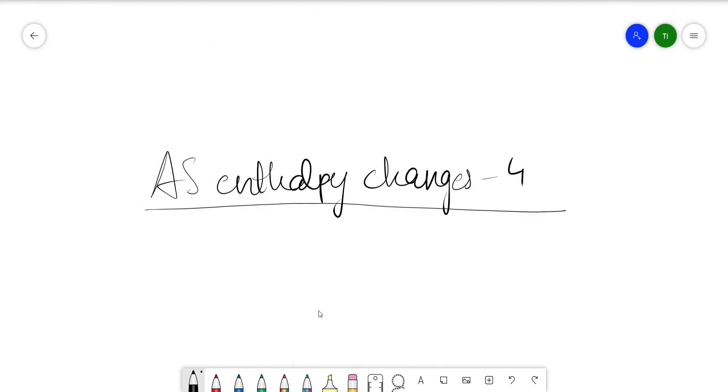Hello everyone, in today's video we'll be covering the last part of AS enthalpy changes of CIE level chemistry, which is measuring enthalpy changes. This is done by the rise or decrease in temperature of water.